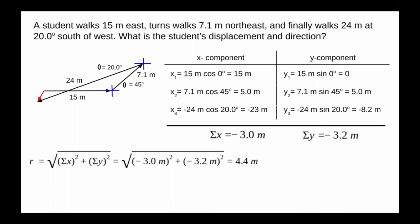So take the arc tangent of the y sum and the x sum. I keep the signs and units so people know where I got the answer. So it's 47 degrees. The answer would be written: the student's displacement is 4.4 meters at 47 degrees south of west.